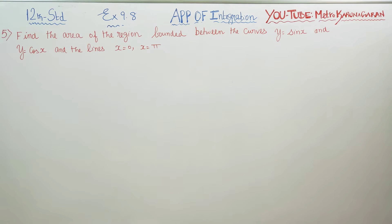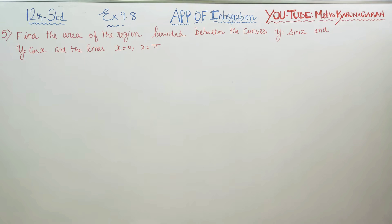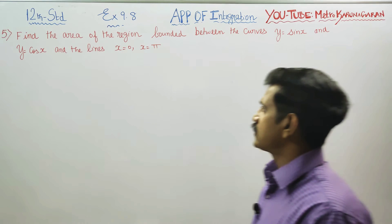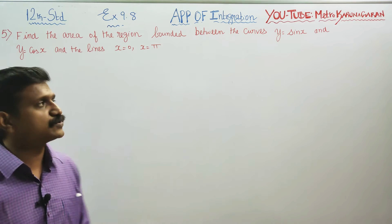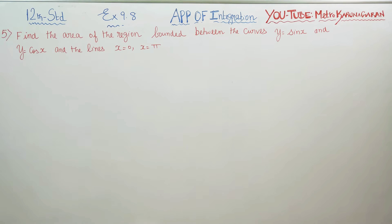Dear 12th standard students, in exercise number 9.8, sum number 5: find the area of the region bounded between the curves y = sin x and y = cos x, and the lines x = 0 and x = π.